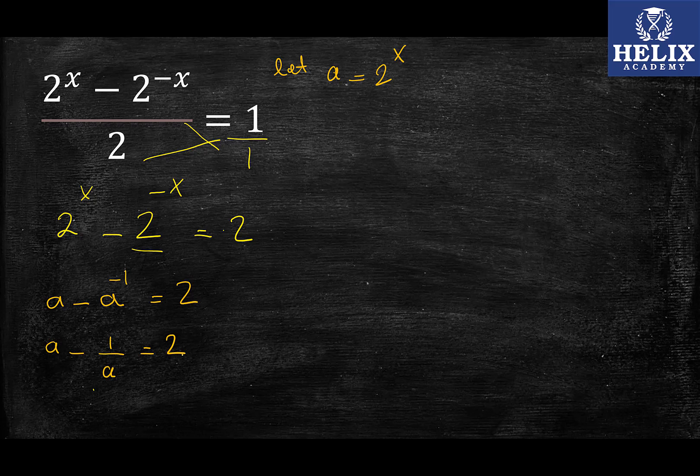Now the next thing I want to do here is to take the common denominator. So I'll have a, and then on top I'll have a^2 - 1 = 2. This is starting to look like quadratic, so I'm sure you can see it.